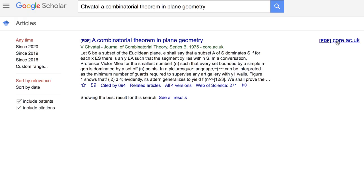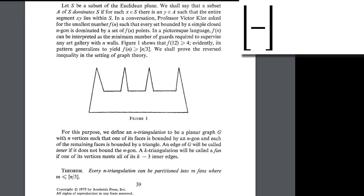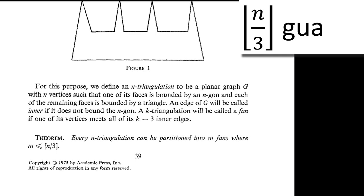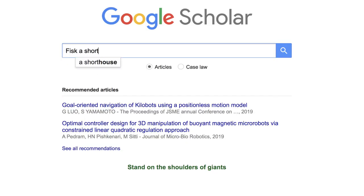For a simple polygon with n vertices, floor of n divided by 3 guards are always sufficient and sometimes necessary. Three years later,